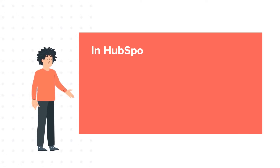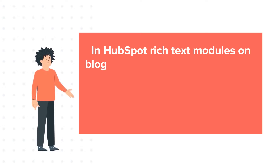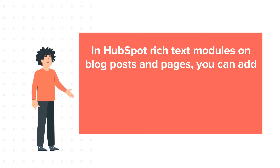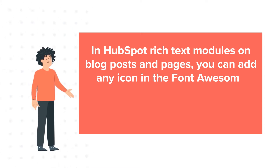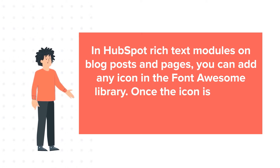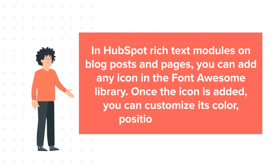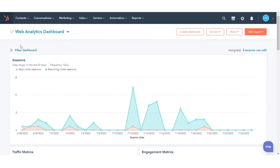You can add any icon in the Font Awesome Library to Rich Text Modules on Blog Post and Pages. Once the icon is added, you can customize its color, positioning, and size. In this tutorial, we will show you how to do this.